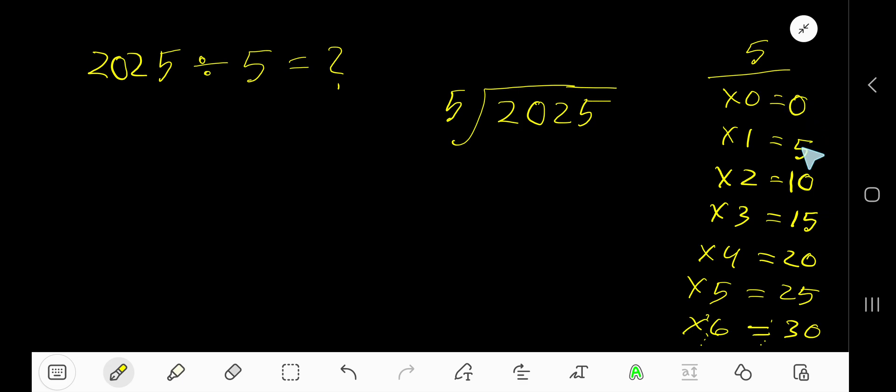To find the multiplication table of 5, just add 5 to the previous result: 0 plus 5 is 5, 5 plus 5 is 10, 10 plus 5 is 15, 15 plus 5 is 20. Now, 5 goes into 2 how many times? 0 times, as 2 is less than 5.